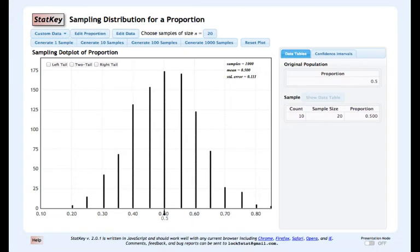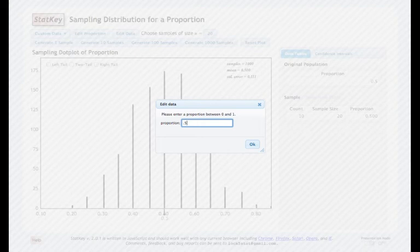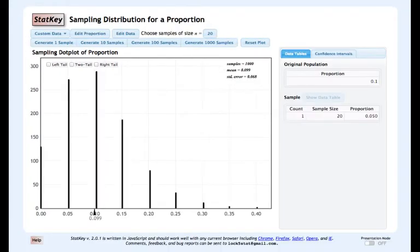Coming back to StatKey, I still have a sample size of 20. I'm going to change my proportion to 0.1, generate a thousand samples. I can see that this doesn't quite look bell-shaped. It almost appears as if it wants to be bell-shaped, but over here on the left side, it just gets cut off. It didn't have room to fit the whole distribution between 0 and 1. So it's not bell-shaped.